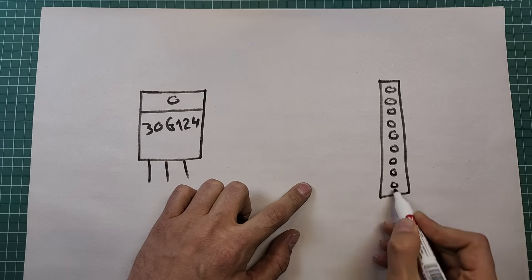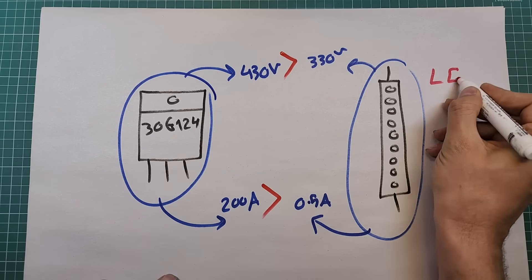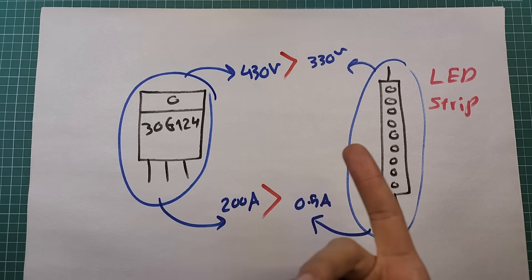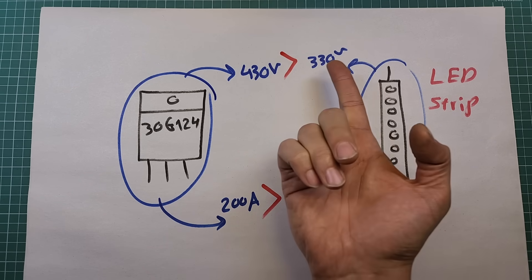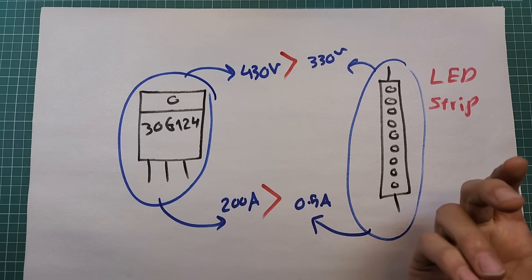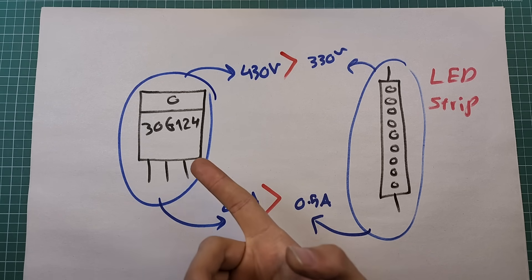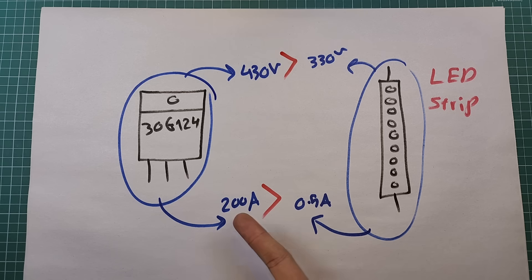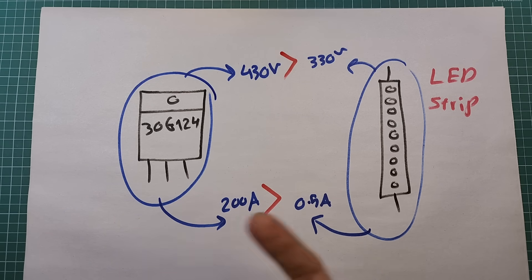You may wonder why I chose the IGBT with part number 30G124 specifically. There are a few points to consider when choosing the right IGBT. First, it must handle the desired voltage — the output is a maximum of 330 volts and this IGBT can handle up to 430 volts, so no problem there. Next, it must handle the required current. According to its datasheet it can switch up to 200 amperes, and here we need a maximum of 500 milliamps for the LED strips — so it is more than capable.